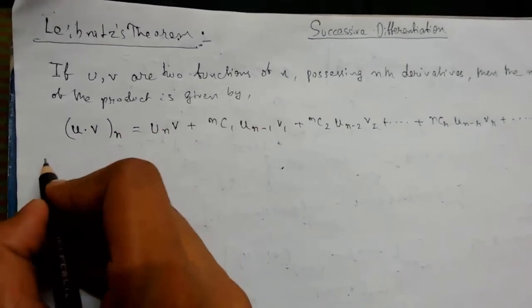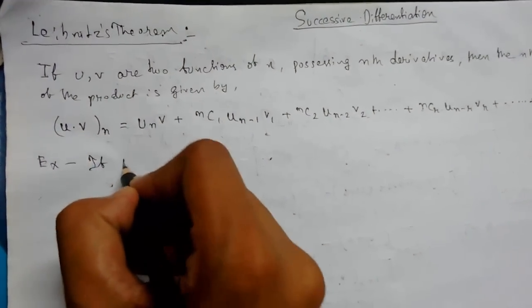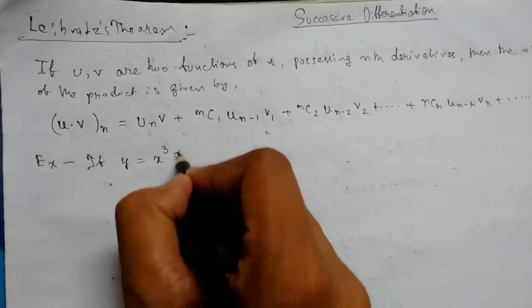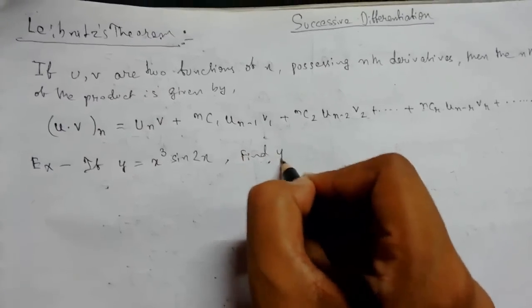To understand this, let us take an example. If we have y = x³sin(2x), so we have to find y_n.